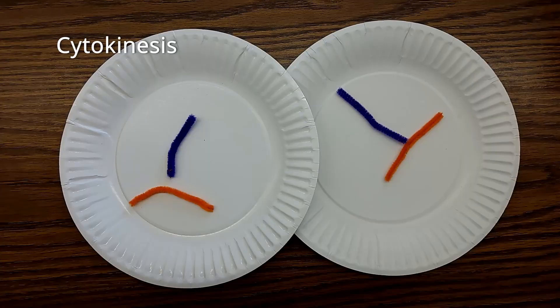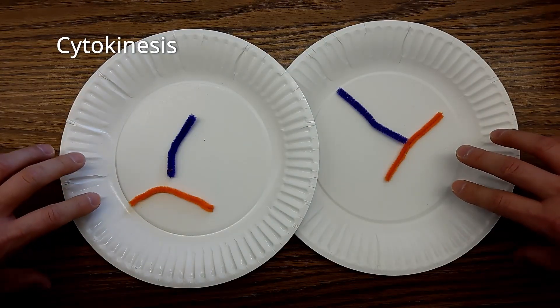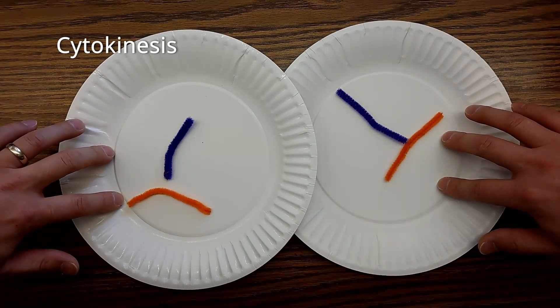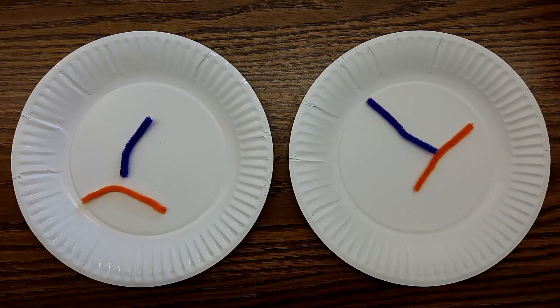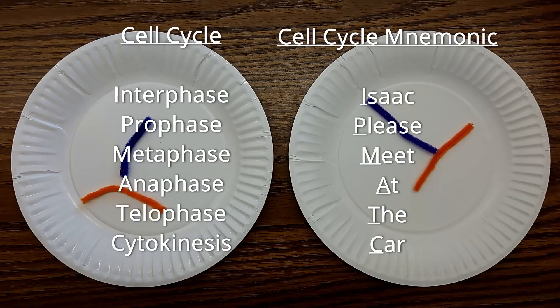Lastly, cytokinesis. The rest of the organelles are divided and the two separate cells form. The cell then begins interphase again.